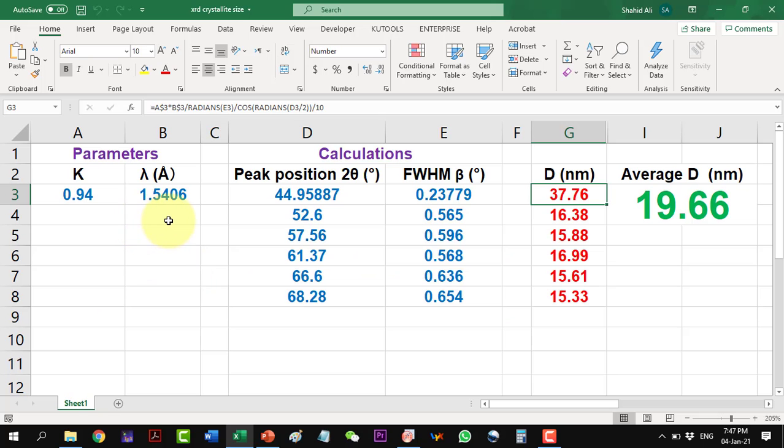In order to calculate the average, I will share with you this Excel file. Here we have the parameters: the Scherrer constant, then the X-ray value, our value of two theta, and the full width at half maximum. The calculation is here which is done as I did in the previous slide. Crystallite size comes out to be 37.76.